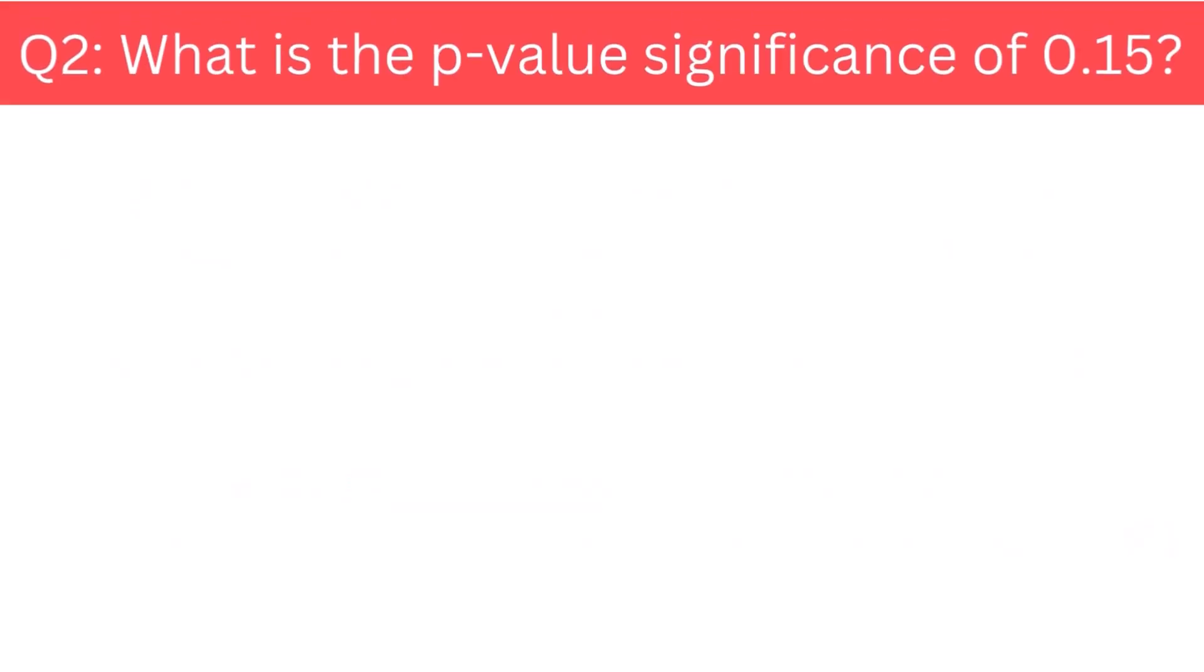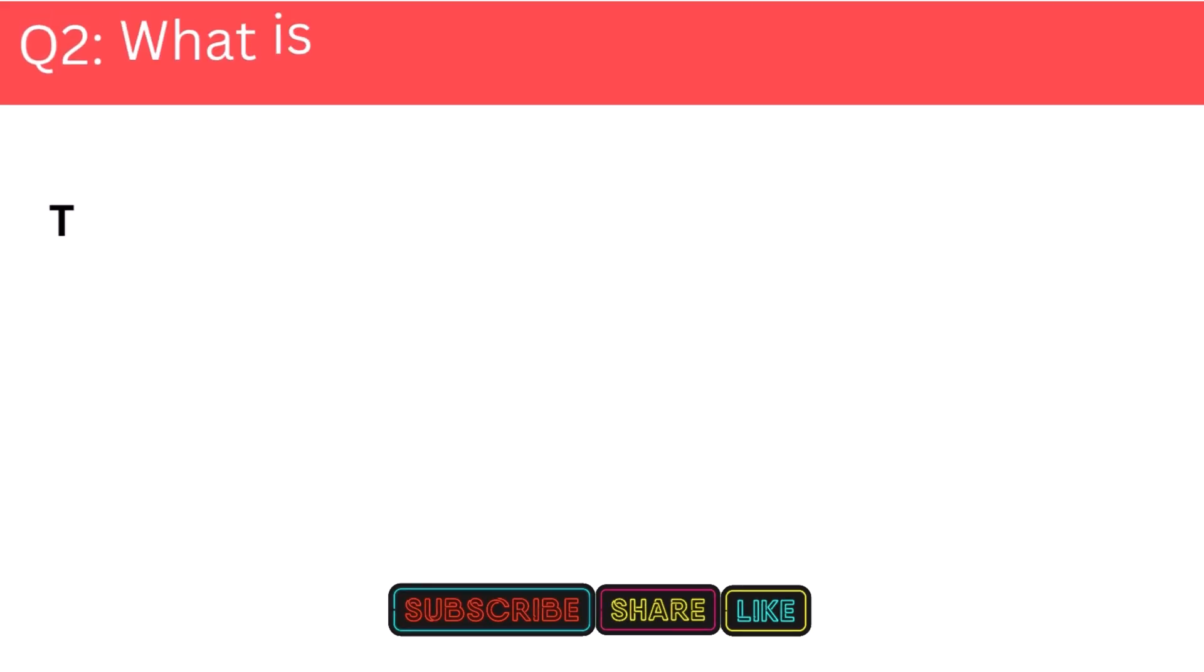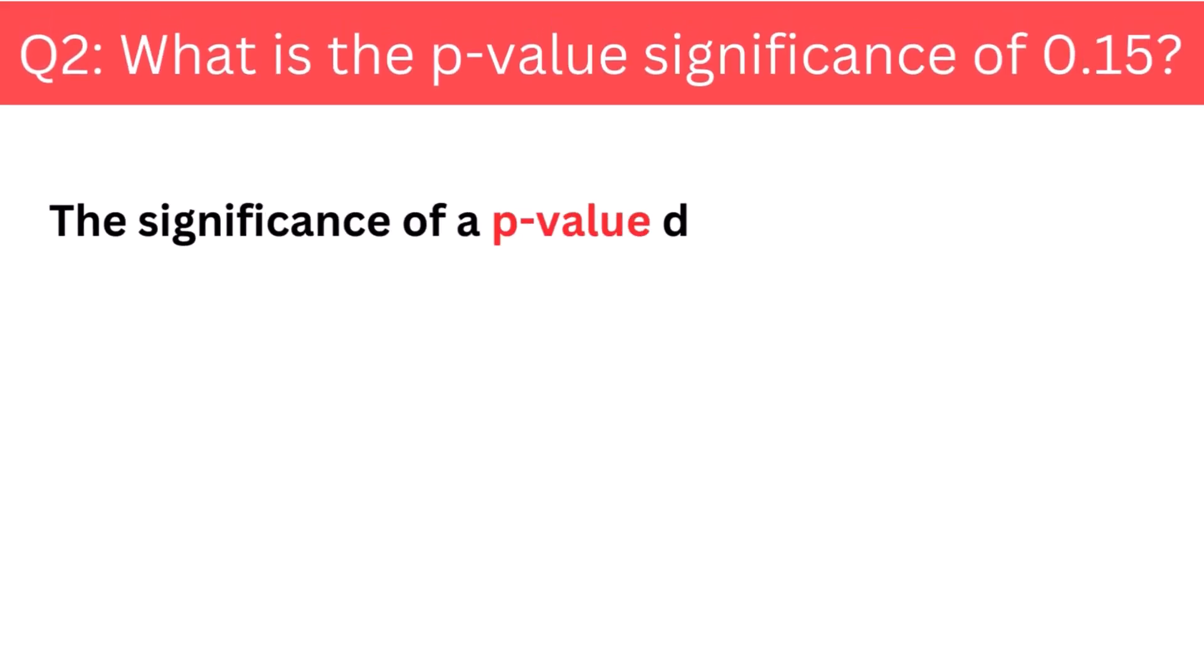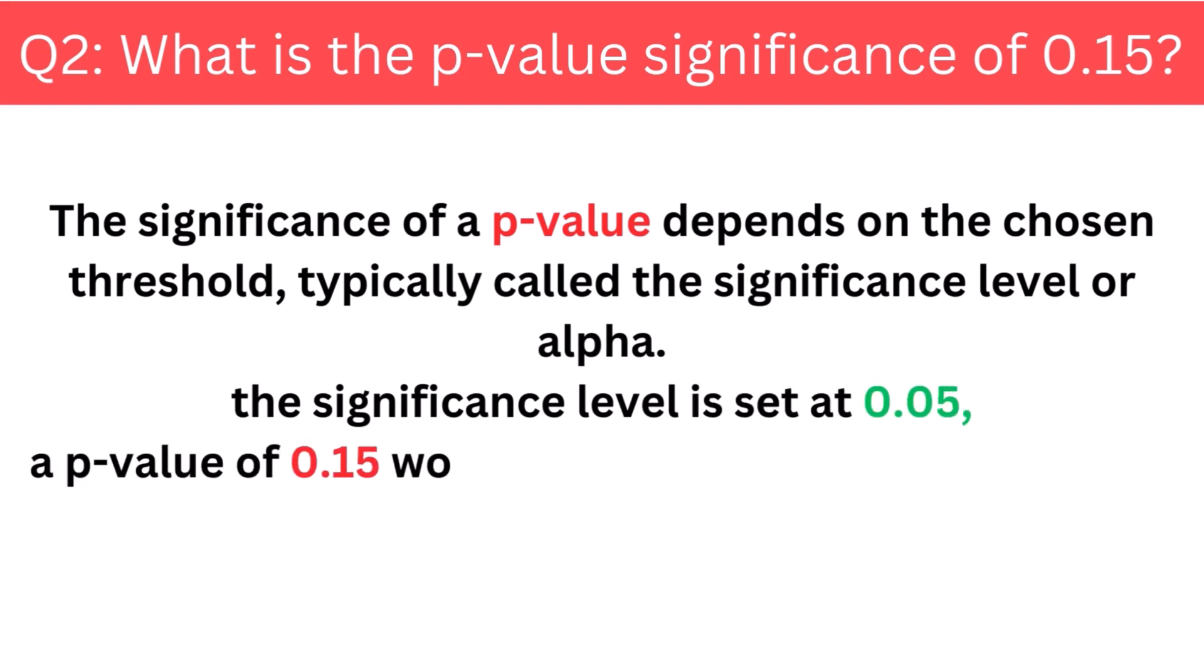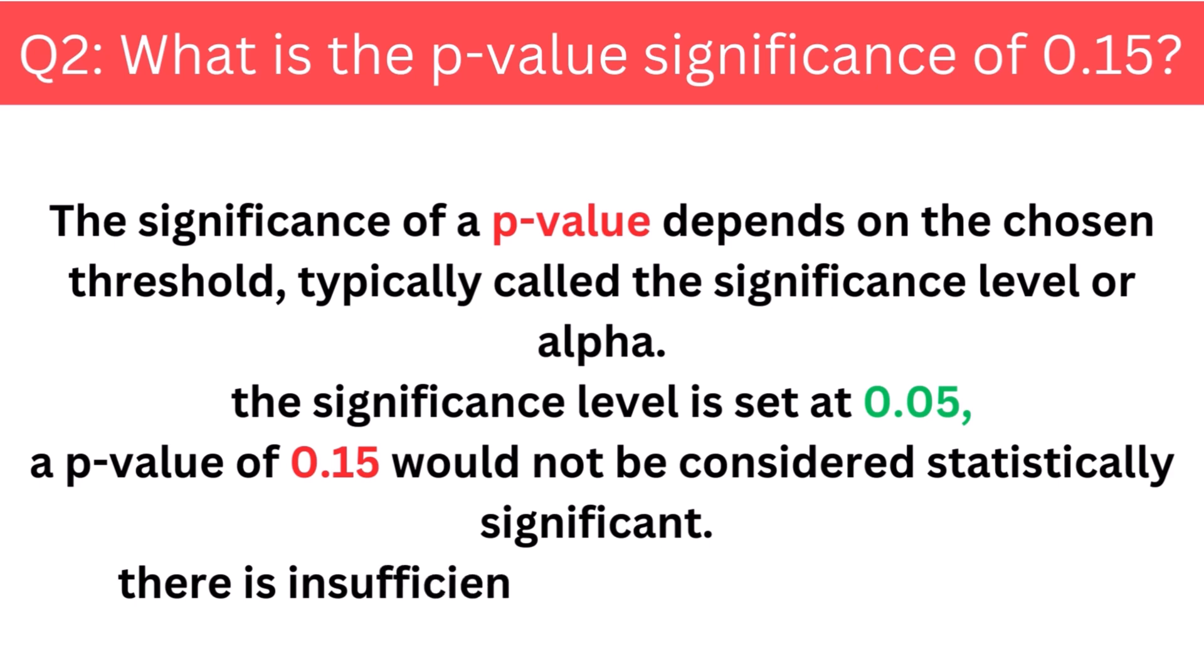What is the p-value significance of 0.15? The significance of a p-value depends on the chosen threshold, typically called the significance level or alpha. If the significance level is set at 0.05, a p-value of 0.15 would not be considered statistically significant. In this case, there is insufficient evidence to reject the null hypothesis. However, it is important to note that significance levels can vary depending on the specific field or study design.